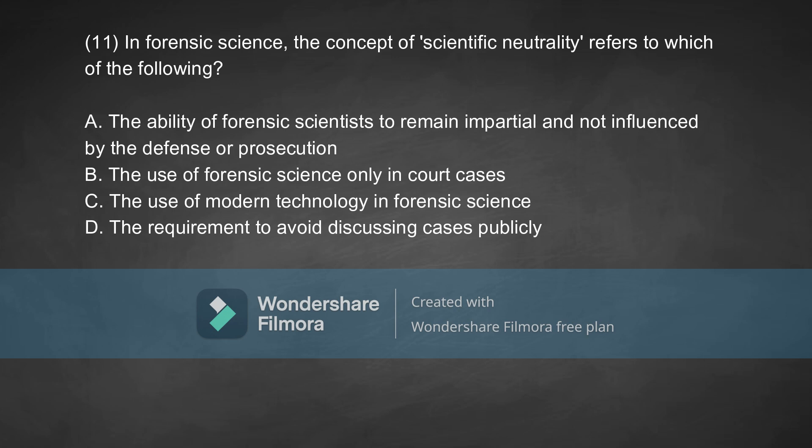Coming to the next question: in forensic science, the concept of scientific neutrality refers to which of the following? Option A, the ability of a forensic scientist to remain impartial and not be influenced by the defense or prosecution. Option B, the use of forensic science only in court cases. Option C, the use of modern technology in forensic science. Option D, the requirement to avoid discussing cases publicly. The correct answer is Option A.